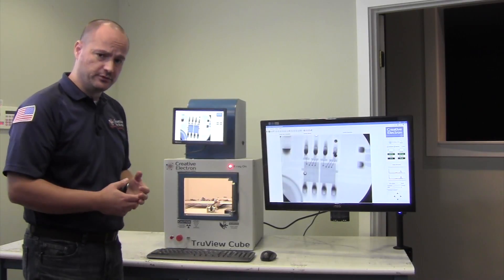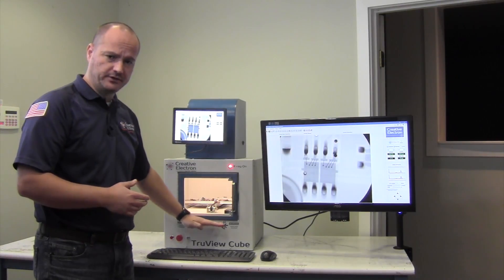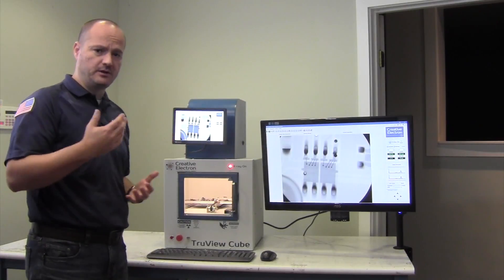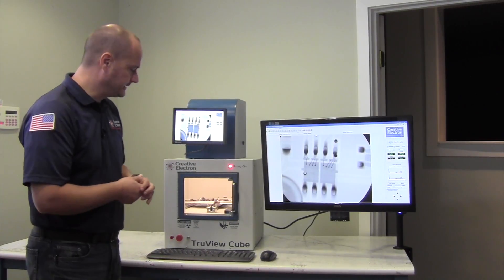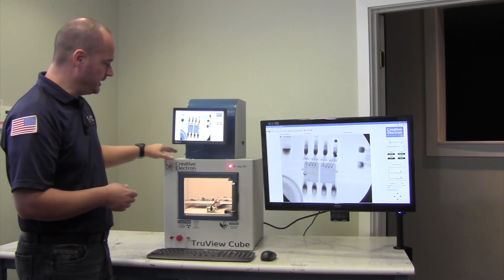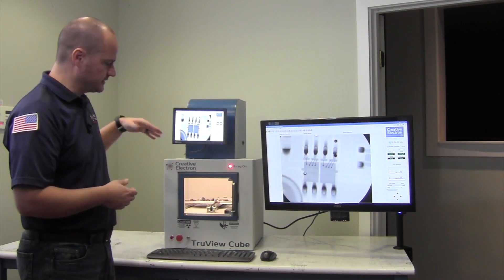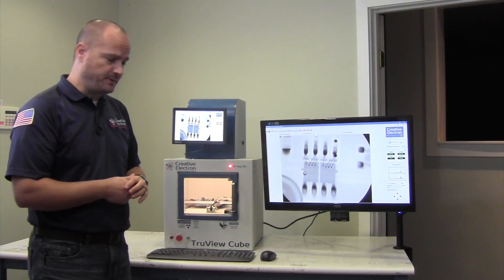And we also have a version of the TrueView that has a flat panel on the bottom and the source on the top, depending on what type of samples you are looking to inspect. The TrueView Cube A is right here in front of us. It's a real-time X-ray inspection system.